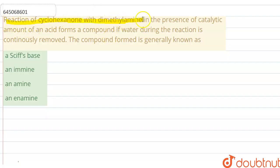Reaction of cyclohexanone with dimethylamine in the presence of catalytic amount of an acid forms a compound. If water during the reaction is continuously removed, the compound formed is generally known as... So we have to write the balanced equation.